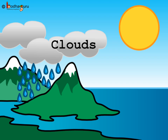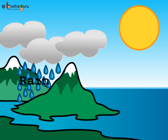But when there is too much collection of water droplets in the clouds, the clouds become heavy. This means the cloud can no longer hold this much amount of water, and the water starts to fall back in the form of rain. So we see that both evaporation and condensation result in rainfall.